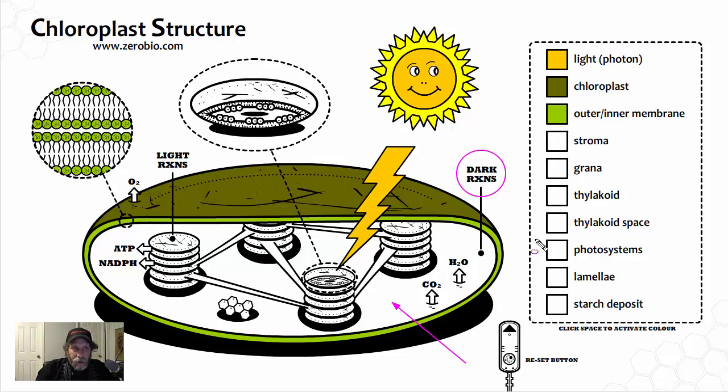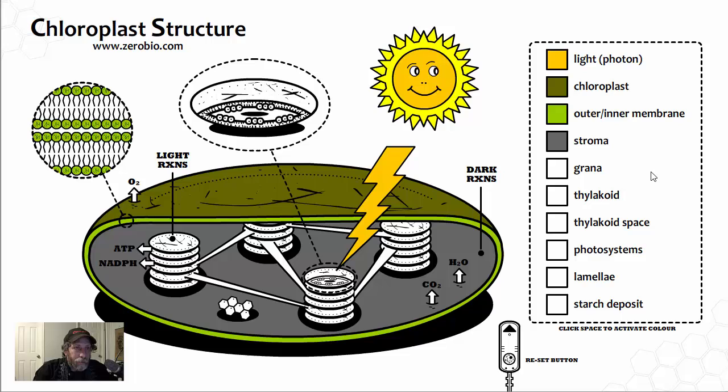This is going to be the site for something called the dark reactions. This is really the second half of photosynthesis. So I'm trying to indicate here that the dark reactions occur in here, whereas the light reactions, which we'll talk about in a moment, occur in these structures right over here. We're going to color in the stroma, which is where the dark reactions occur.